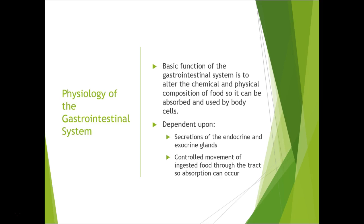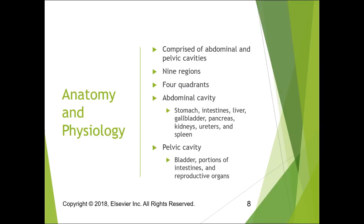The basic function of the GI system is to alter the chemical and physical composition of food so it can be absorbed by the body and into the cells. It's dependent upon secretions of the endocrine and exocrine glands and controlled movement of ingested food through the tract. Most, if not all, absorption happens in the small bowel.